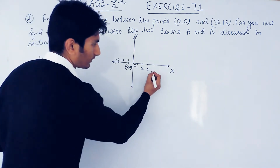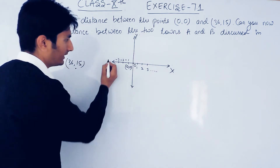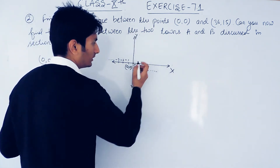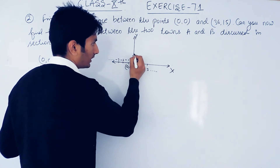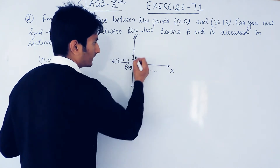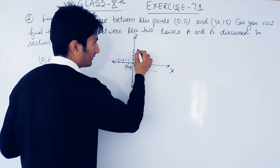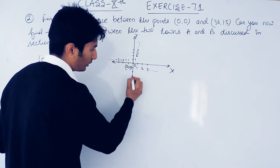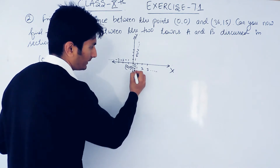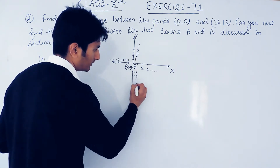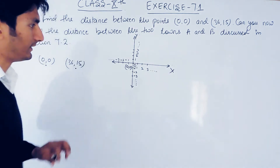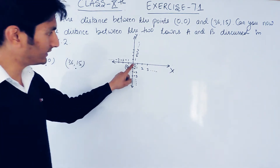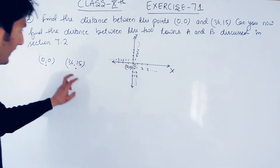These go till positive infinity and these go till negative infinity. From the origin, if we move upward the numbers will be positive till plus infinity, and if we move downward the numbers will be negative till negative infinity.